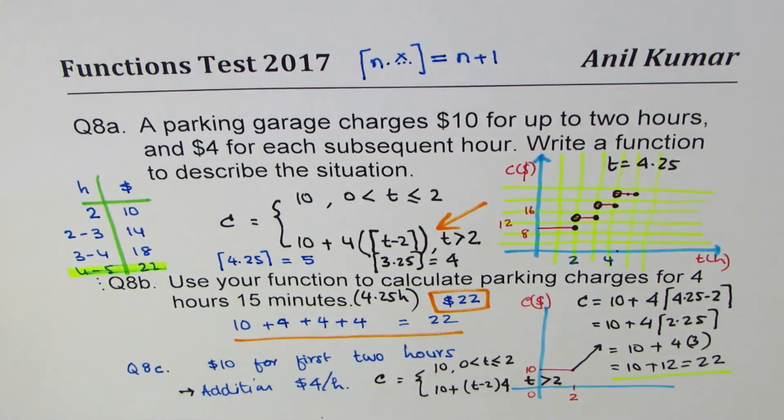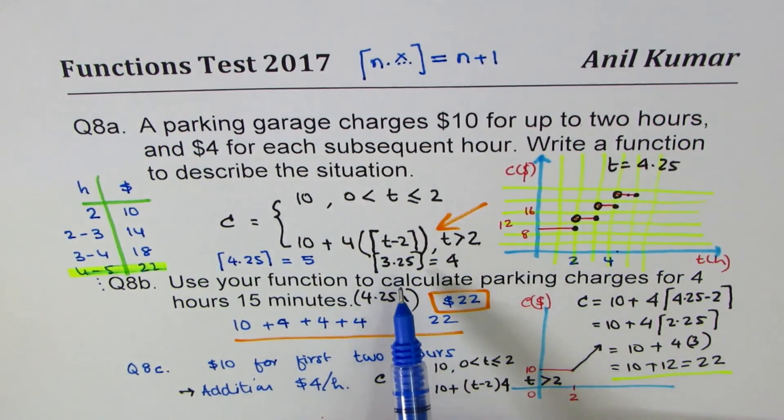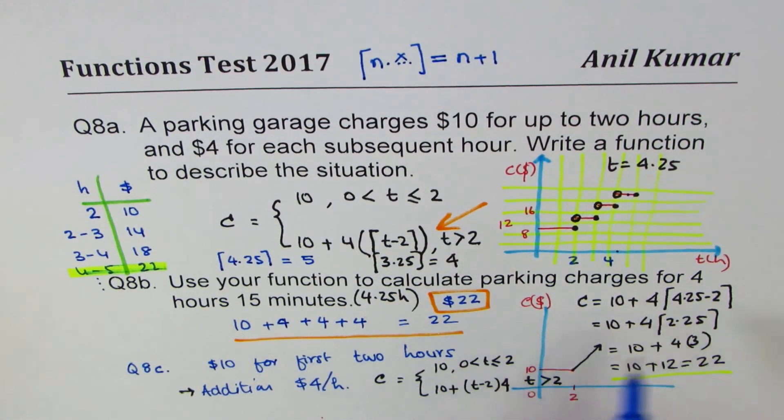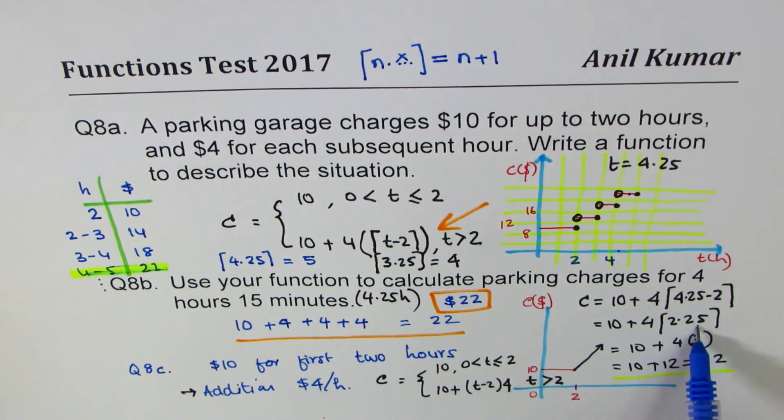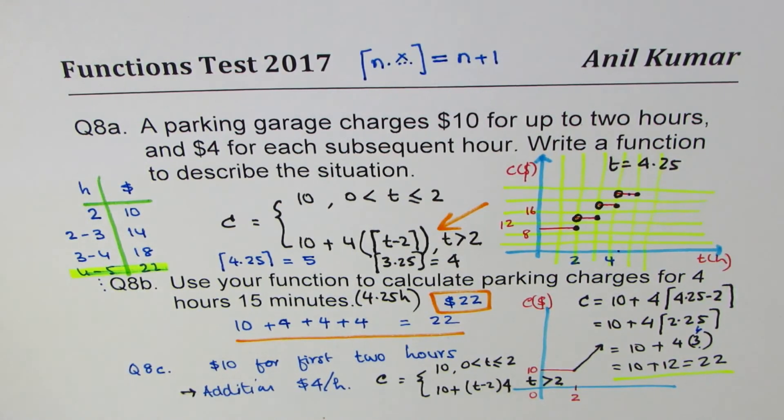So you saw that 2.25 rounds to 3. That is kind of important to understand. So that's the ceiling function. I'll give you a link for ceiling function so that you understand. And here, with the help of this diagram, you can understand how the parking charges are being subjected to.